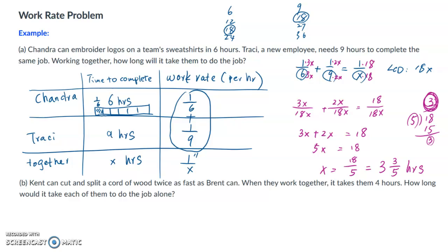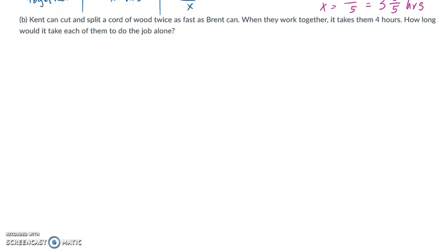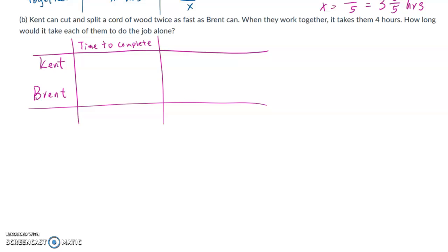Okay, now let's look at problem B here. So here we also have two people involved. One is called Kent and the other one is Brent, and they are cutting wood. Kent can cut and split wood twice as fast as Brent can. When they work together, it takes 4 hours. How long will it take each of them to do the job alone?